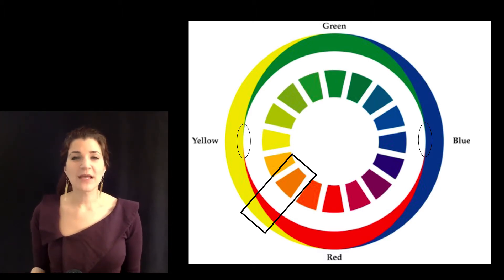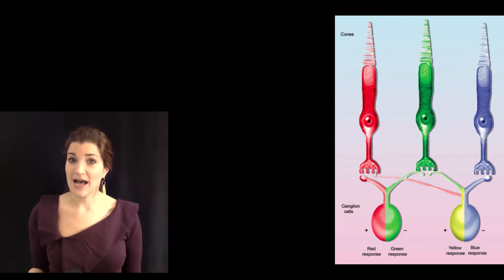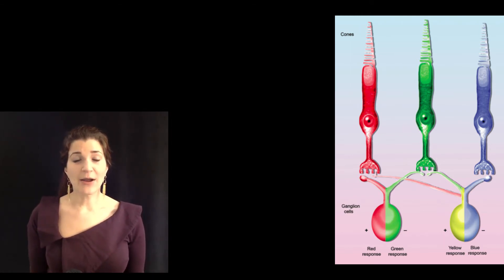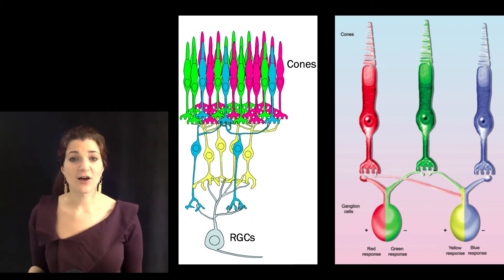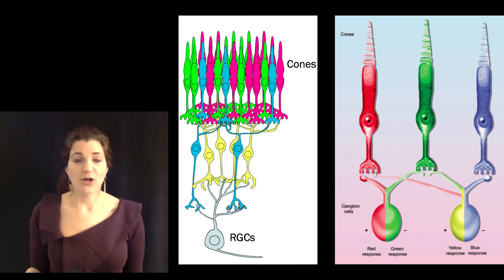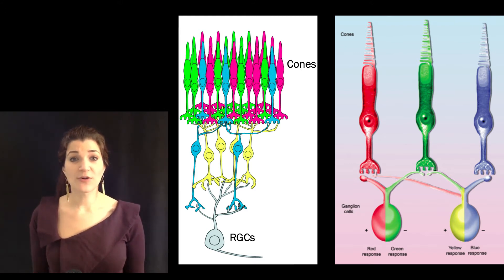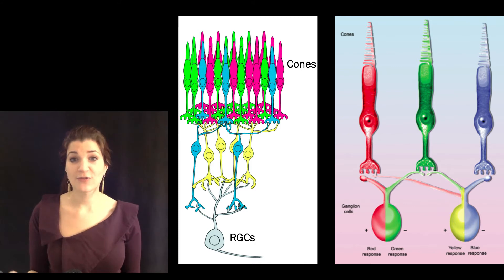But the question is: how can it be that we have three cone types, but four unique colors? The answer lies in the structure of the eye. Each retinal ganglion cell gets input from multiple different types of cones. There are in fact two different classes of retinal ganglion cells responsible for coding four colors — a red-green circuit and a yellow-blue circuit. The red-green circuit gets input from both long and medium cones, while the yellow-blue circuit gets input from all three cone types.